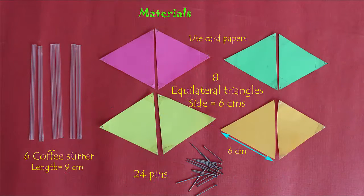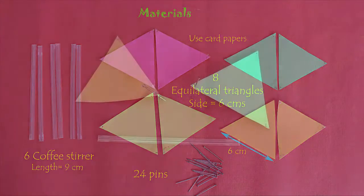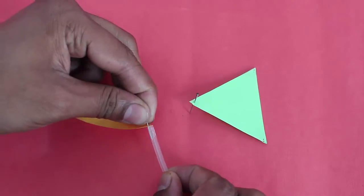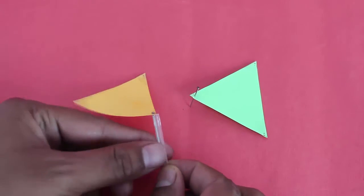To make this tensegrity model you need 6 plastic coffee stirrers or straws 9 cm long, 8 equilateral triangles 6 cm on the edge, and 24 pins.